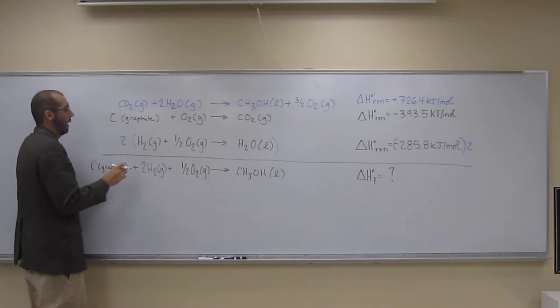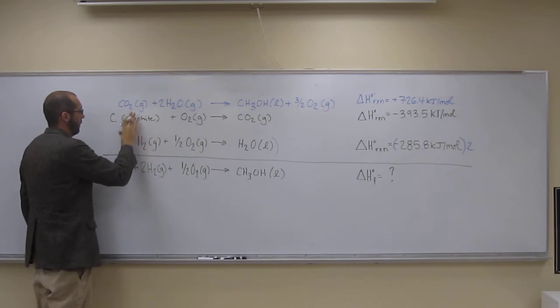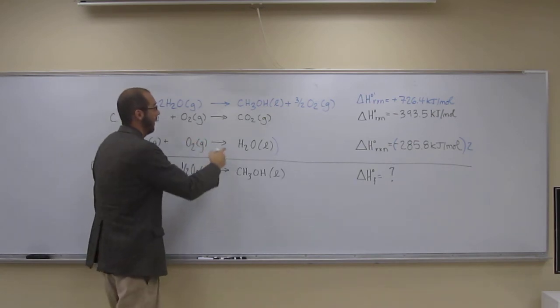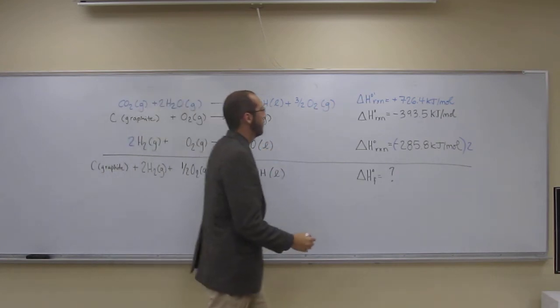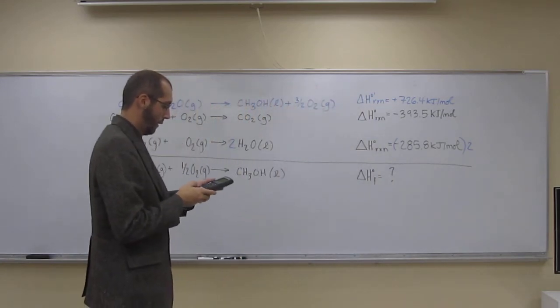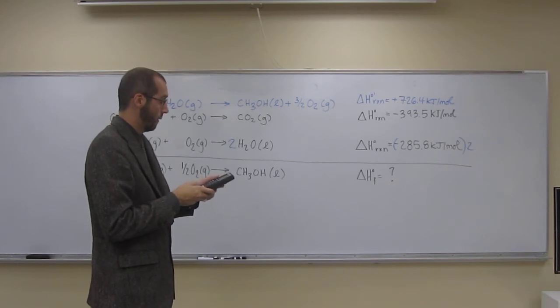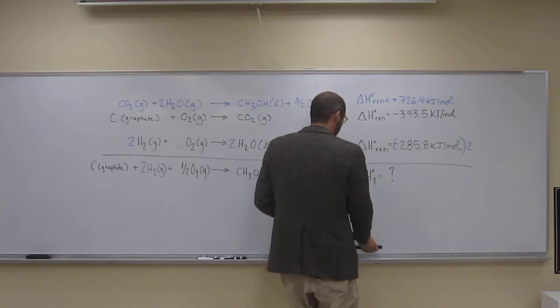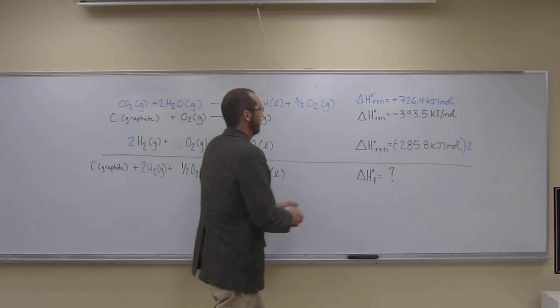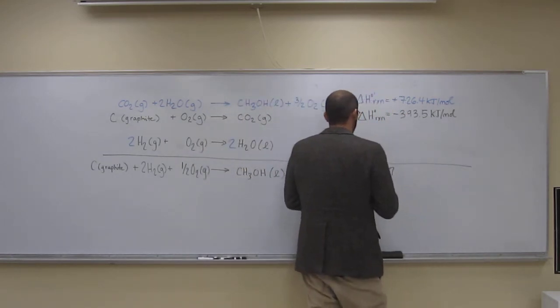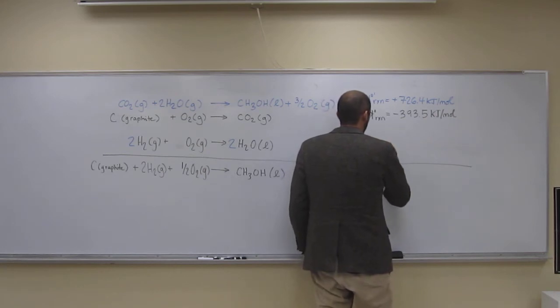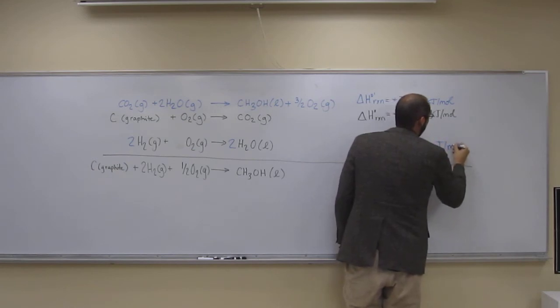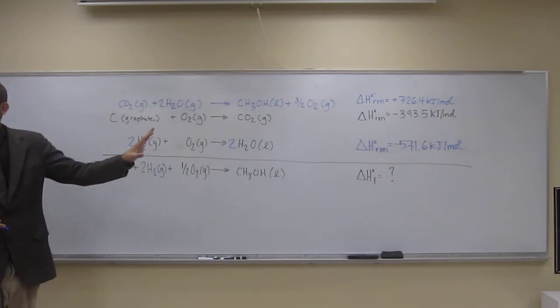So what's our new equation going to be? I'm just going to rewrite it here with blue coefficients. 1 times 2 is 2, 1 half times 2 is just 1, and 1 times 2 is 2. So the new delta H of reaction is going to be negative 285.8 times 2, and I get negative 571.6 kilojoules per mole. Are you okay with what we've done so far?